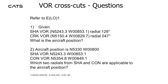VOR cross cuts questions. Going to the chart: given Shannon VOR radial 129 and Cork VOR radial 047, what is the aircraft position? If the aircraft position is north 5330, west 008, which two radials from Shannon and CON are applicable to the aircraft position?